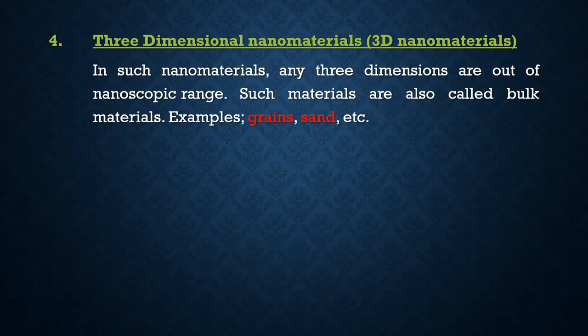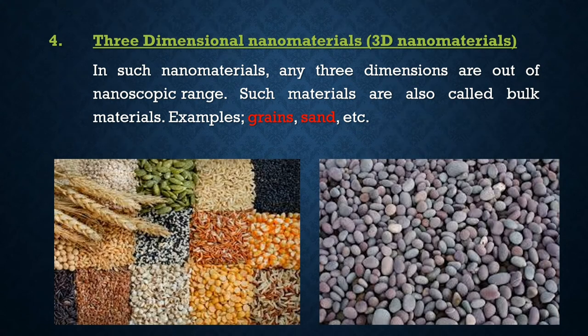The last classification is three-dimensional (3D) nanomaterials. In such nanomaterials, all three dimensions are out of nanoscopic range. These materials are also called bulk materials, with examples being grains and sand. None of their dimensions is within the nanoscopic range — they are all higher than 100 nanometers. We can easily see these with our naked eye.